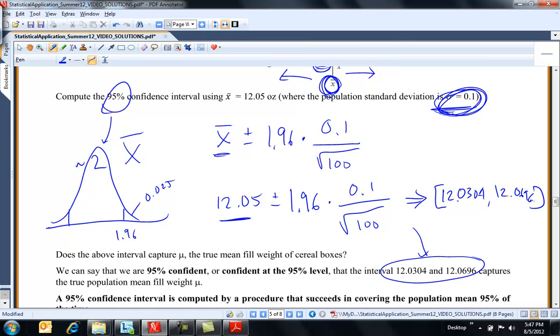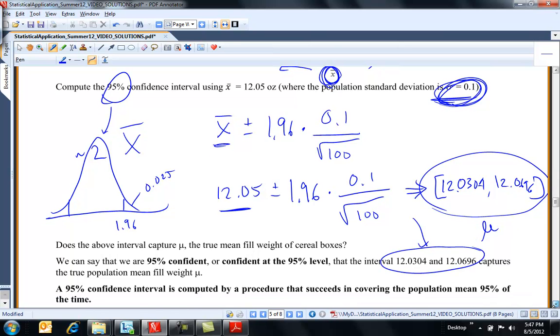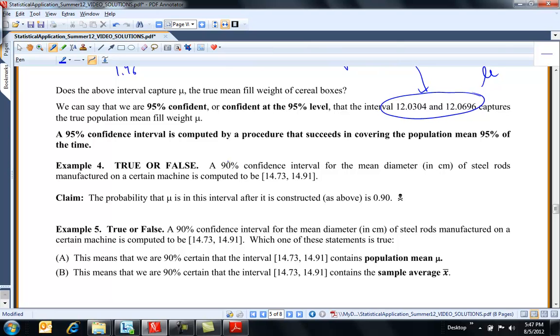And I am 95% certain that this contains the true mean mu amount of cereal in all the boxes made that day. So that's what this is saying. So again, 95% of the time, if I use this method, I'm going to capture the true mean mu. Sometimes I'm not going to.